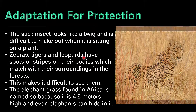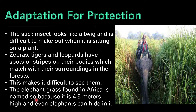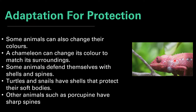Zebras, tigers and leopards have spots or stripes on their bodies which match with their surroundings in the forest, making it difficult to see them. The elephant grass found in Africa is named so because it is 4.5 meters high and even an elephant can hide in it, as we can see in this image — the grass height is more than the elephant's height. Some animals can also change their color; for example, a chameleon can change its color to match its surroundings, as we can see here, the chameleon is changing its color to match the surrounding green color.